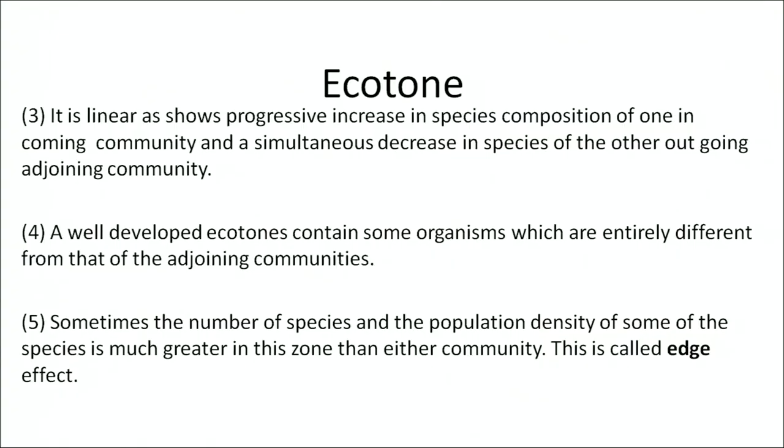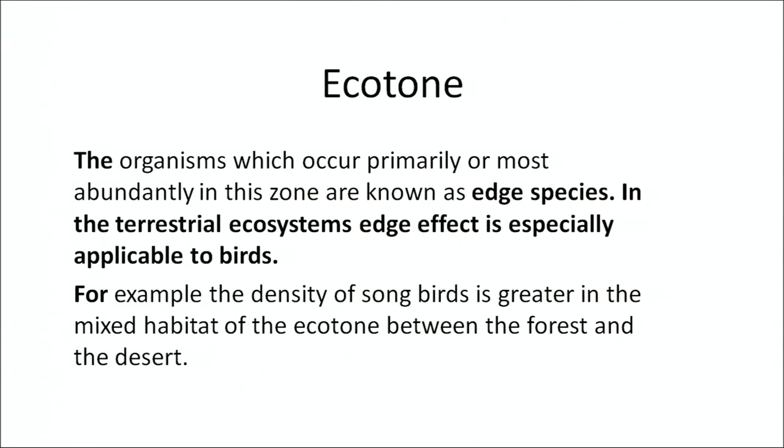An ecotone shows progressive increase in species composition of one incoming community and simultaneously a decrease in the species of the other outgoing community. A well-developed ecotone contains some organisms entirely different from both adjoining communities. Sometimes the number of species or population density in the ecotone is much greater than in the adjoining communities — this is known as the edge effect. The organisms which occur primarily or most abundantly in this zone are called edge species. In terrestrial ecosystems the edge effect is especially applicable to birds; for example, the density of songbirds increases in the ecotone zone between forest and desert.